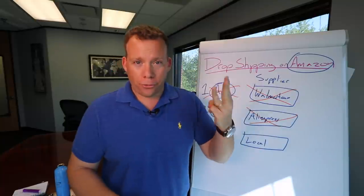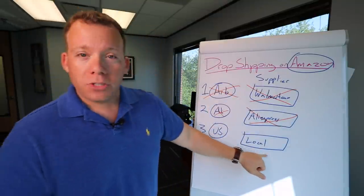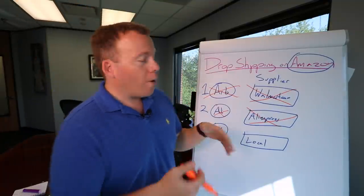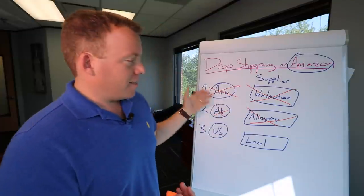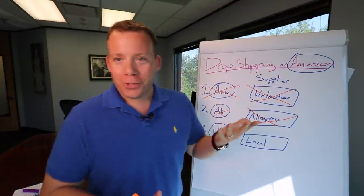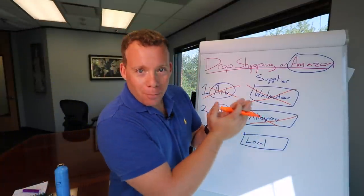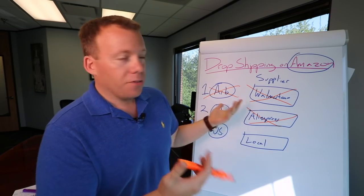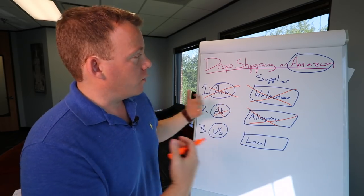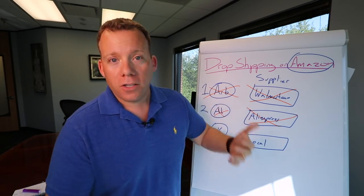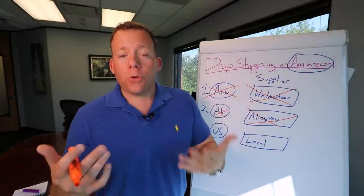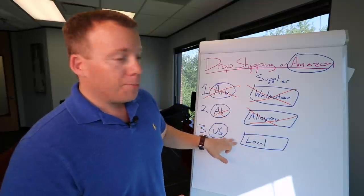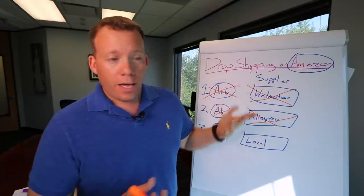The next model is drop shipping with those local suppliers. So the example I can give you would be, if I sold this whiteboard - whoever made this whiteboard, this flip chart - if I had a business relationship with them where I said, okay, flip chart board, what can I basically sell these for? What's my cost? What's my wholesale cost? What's my MAP cost? What's the MSRP? And then I sold them, and then this company fulfilled the orders. Now that, if you think about it, if you wanted to drop ship with that model on Amazon, it would work.